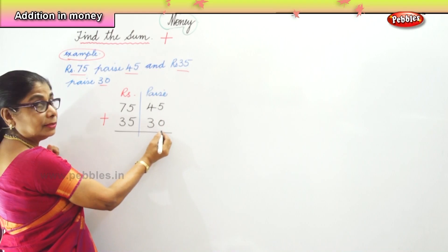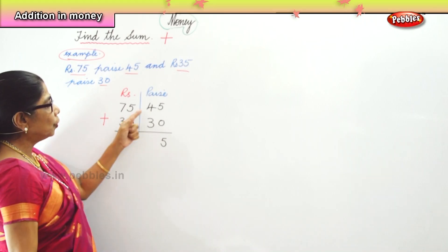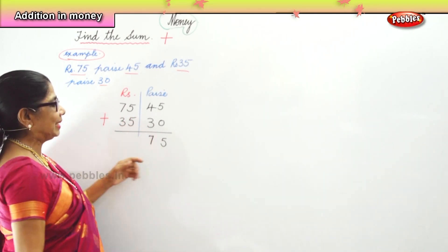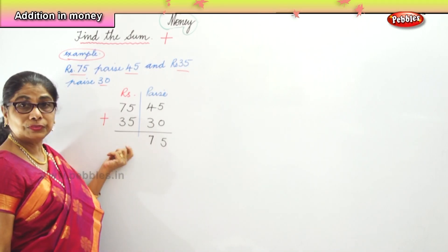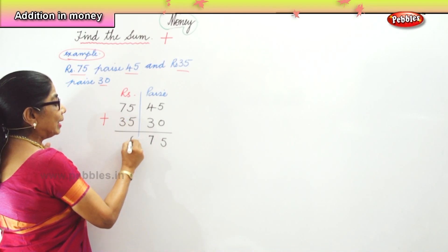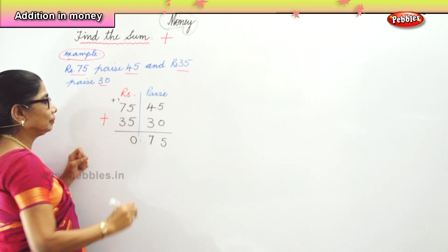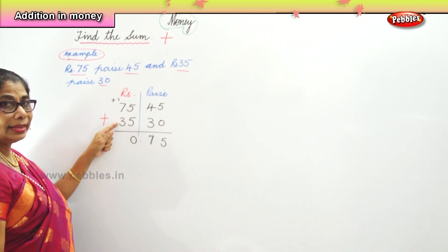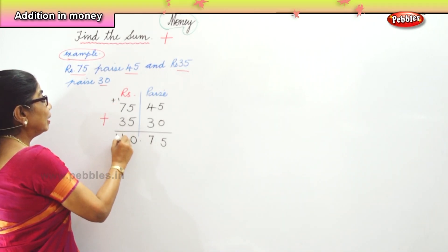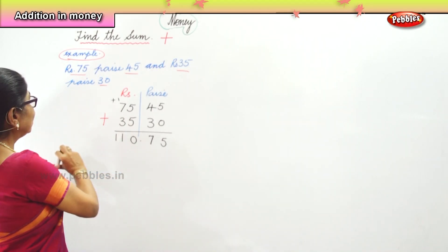First we add the paise: 5 plus 0 is 5, and 4 plus 3 is 7, so we have 75 paise. Now we go to rupees: 5 plus 5 is 10, carry over 1. Then 7 plus 3 is 10, plus 1 carried over is 11. So we have 110 rupees and 75 paise.